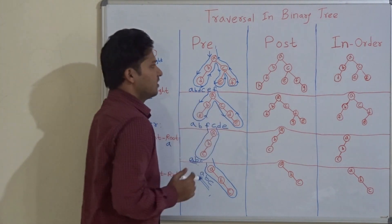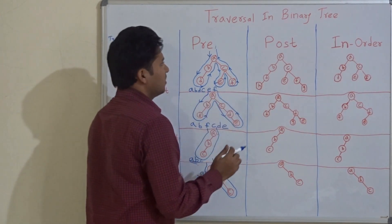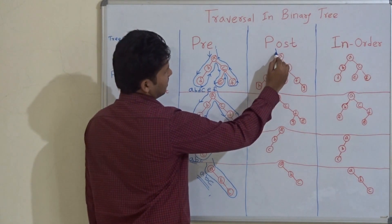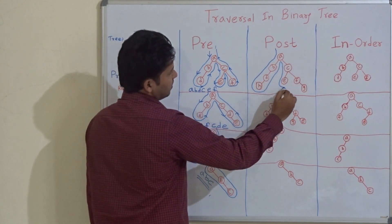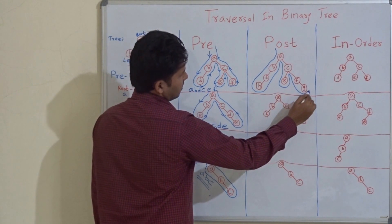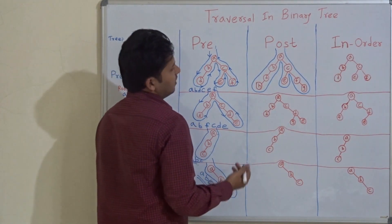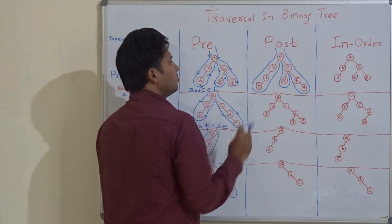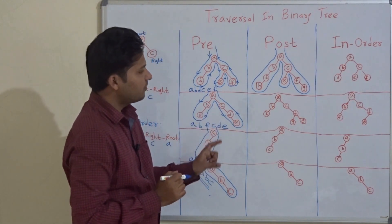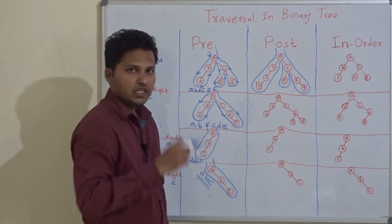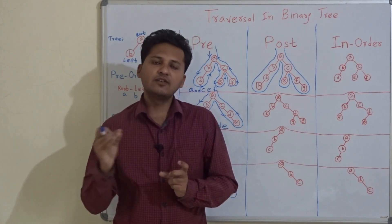Now let's go for post-order traversal. The drawing of the contour traversal is the same as in pre-order. After drawing, the trick in post-order traversal is that you write the node in the answer only when you leave the node — meaning you are never going to visit that node again.